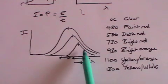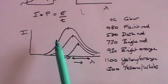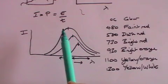so this graph moves this way and you get into the visible light region.